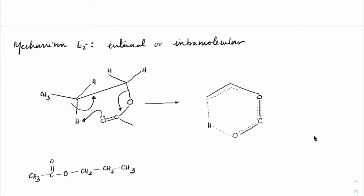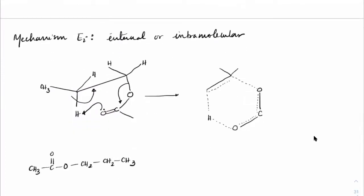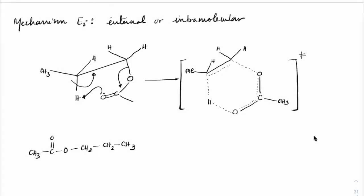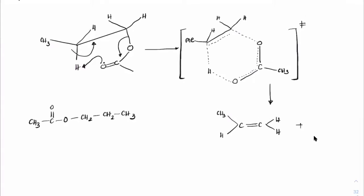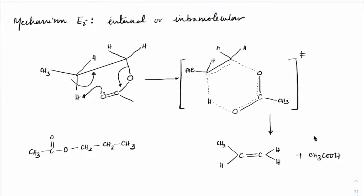As the transition state breaks completely, we get: CH₃–CH=CH–H (the alkene) plus CH₃COOH (acetic acid). This is the pyrolysis of esters. The Ei mechanism gives a syn elimination through a cyclic transition state.